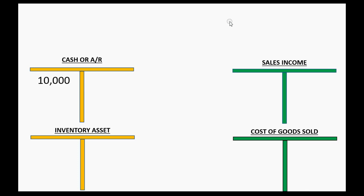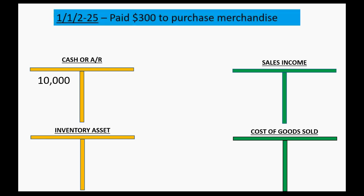First, let's give cash a beginning balance. That's not a transaction — we're just pretending that we're starting off with $10,000 cash. Now, here's our first transaction: paid $300 to purchase merchandise. We know if we pay, cash is minus, cash is credit. And just like purchasing any other asset, exactly what we paid for the asset becomes a debit to that asset for that date. So this purchase transaction is no different than the ones we've learned before when we purchased other assets.